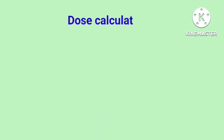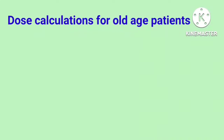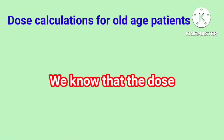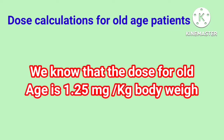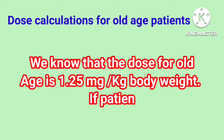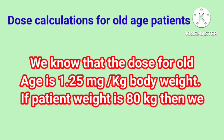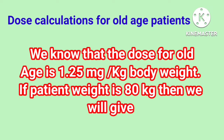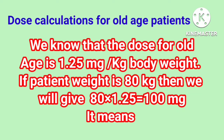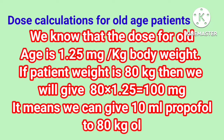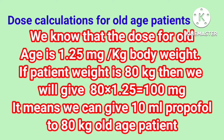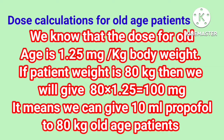Dose calculations for old age patients: the dose is 1.25 mg per kg body weight. If a patient weighs 80 kg, then 80 multiplied by 1.25 equals 100 mg, which means we can give 10 ml of Propofol to an 80 kg old age patient.